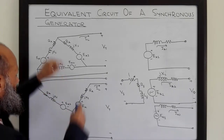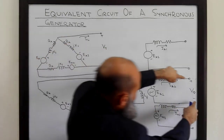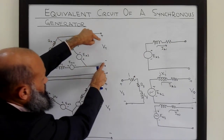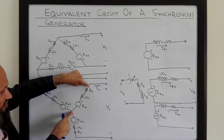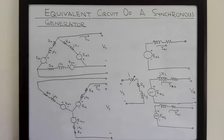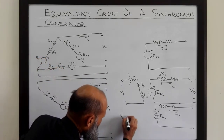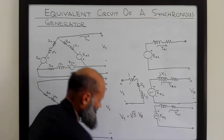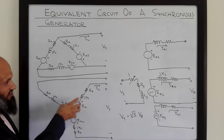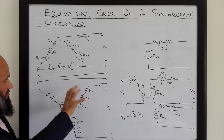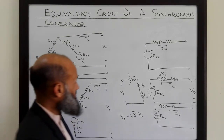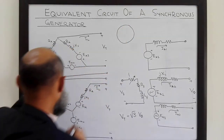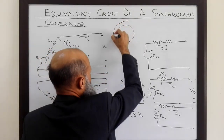In the case of delta connection, the phase voltage equals the terminal voltage. In the case of star connection, the phase voltage is not the same as the terminal voltage — the terminal voltage is square root of three times the phase voltage. Remember that these are only the electrical connections; this does not show the physical placement of coils. The coils are physically placed in the stator of the synchronous generator — rectangular coils with multiple turns, with each side of the coil placed in slots in the stator.